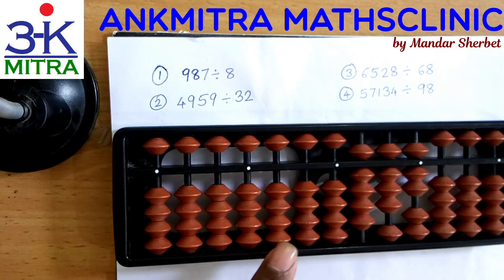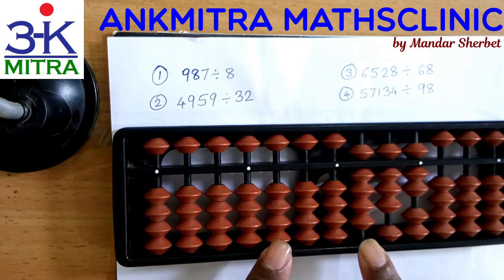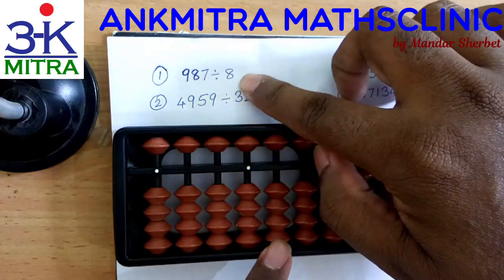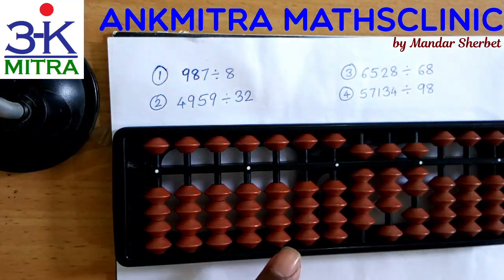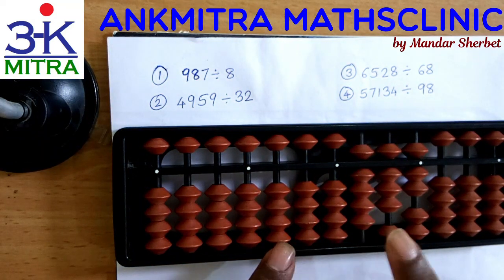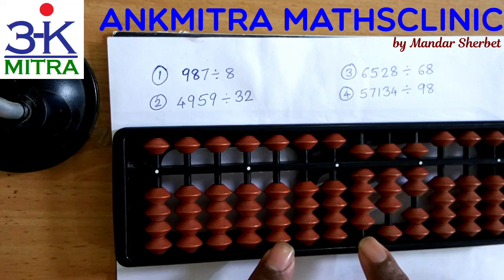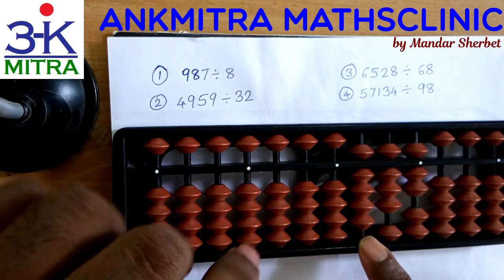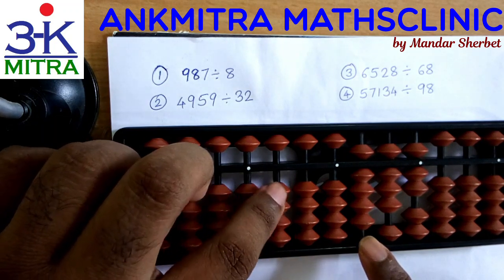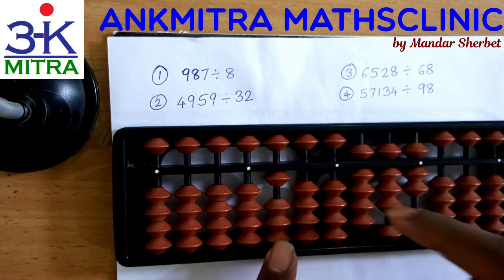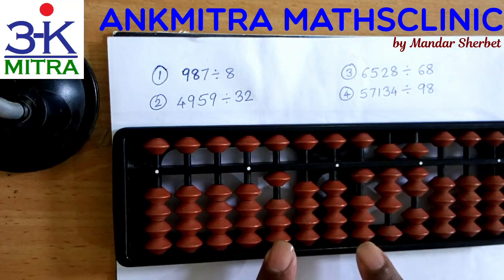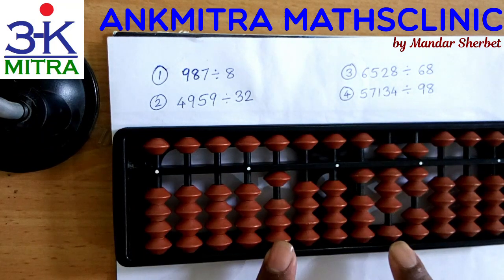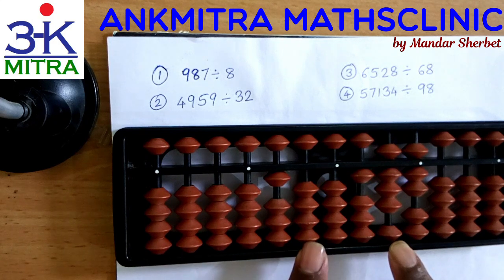This is the hundred's place of the answer set. The first number is 9. Since the divisor is 8, we need to recite the table of 8. The first number being 9, we can easily subtract 1 times 8, which is 8. So I'll take 1 in the answer set, subtract 8 from the question set, then move on to the next rod.